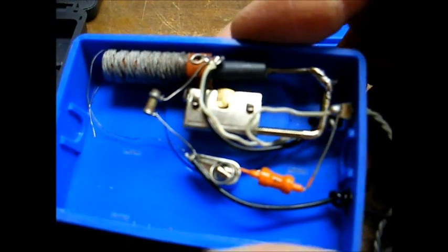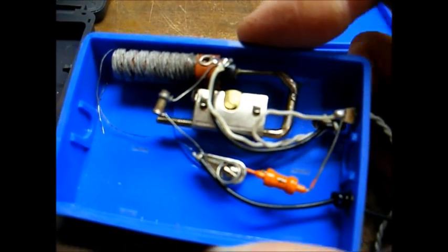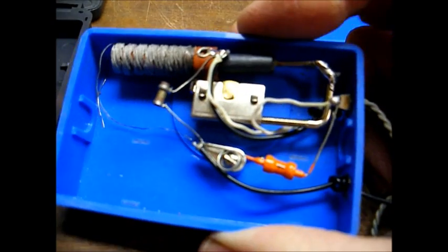As you can see, when the tuning knob is rotated, an iron core moves in and out of the inductor.